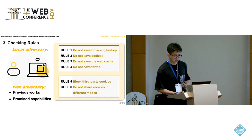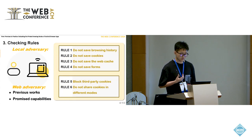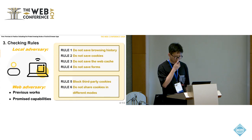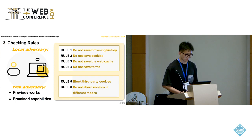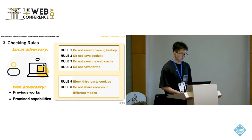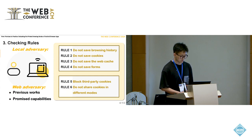Based on the above two threat models, we propose six rules to systematically evaluate browser effectiveness. For the local adversary, we propose rules 1 to 4. And for the web adversary, we propose rules 5 and 6.